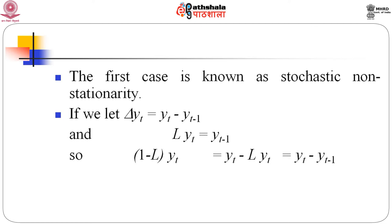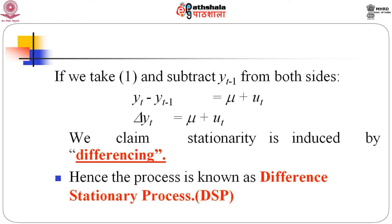Consider the first case: delta y_t = y_t - y_{t-1}. If we subtract y_{t-1} from both sides, we get delta y_t = mu + u_t. In this case, stationarity is obtained by differencing, and hence this process is known as the difference stationary process — that is, the process where we obtain stationarity by taking differences of the data series.